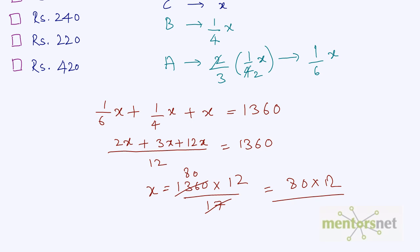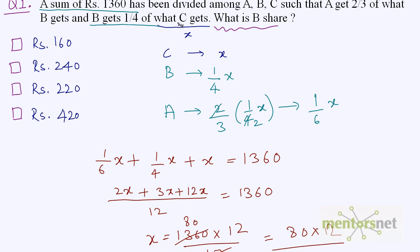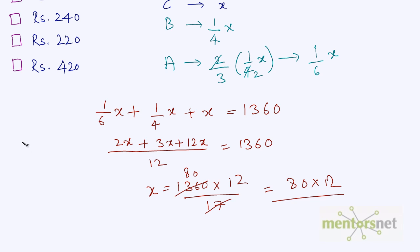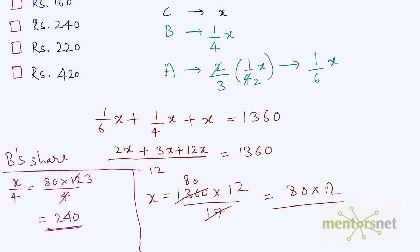Let's keep X as it is because that is not what is asked. What is asked is B's share. X is the share that C gets, so B's share is one-fourth of X. B's share is X by 4, which is 80 times 12 by 4. Since 4 threes are 12, this is 80 times 3, which is 240. Therefore, the answer to this question is 240.